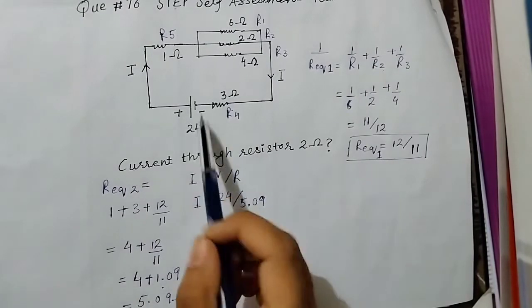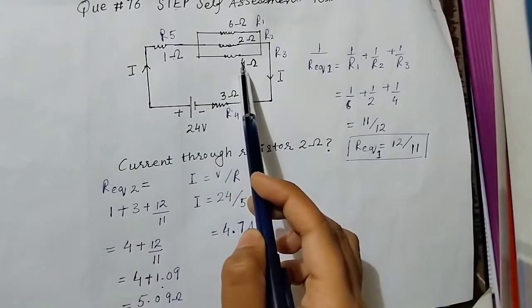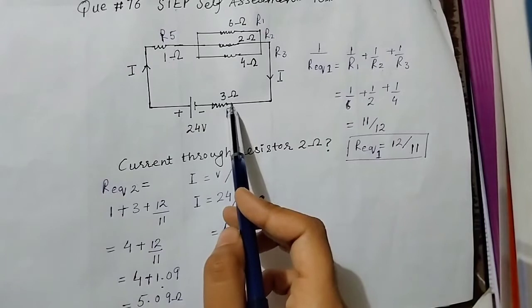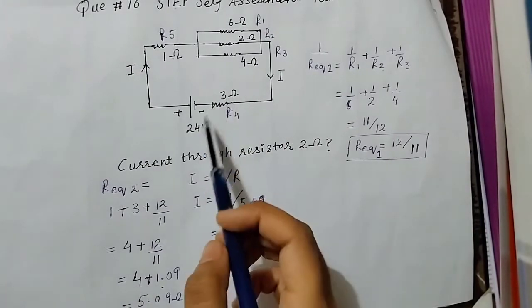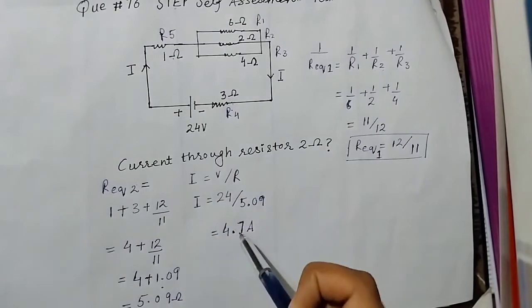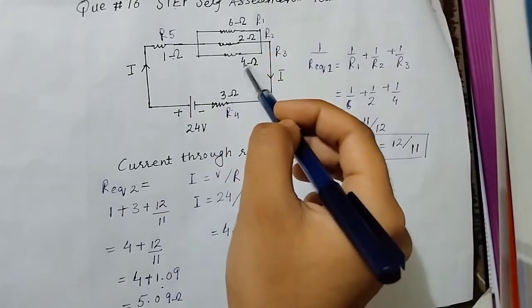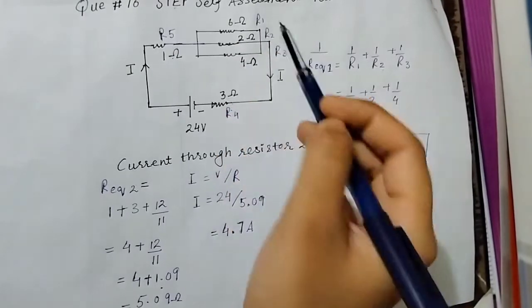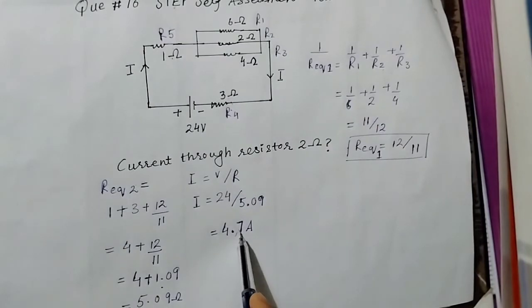If we see, the total current is 4.7 ampere and the voltage we have to find across this parallel portion.